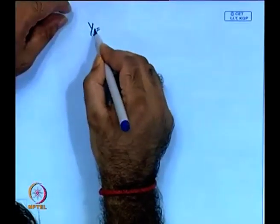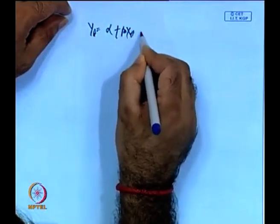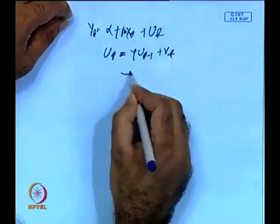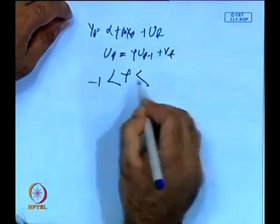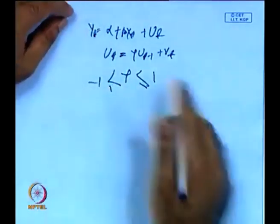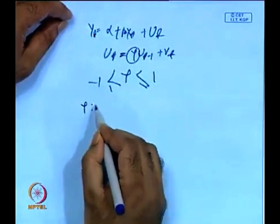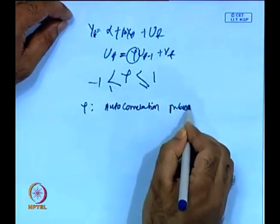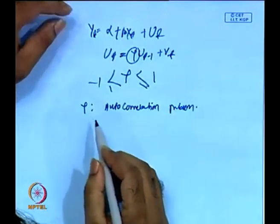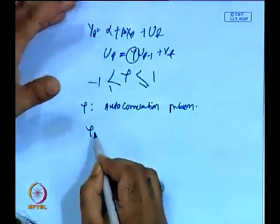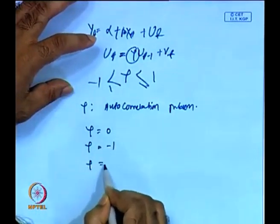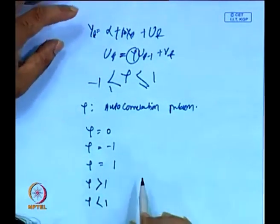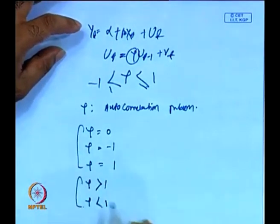Once you have y_t equal to alpha plus beta x_t plus u_t, then u_t equals rho u_{t-1} plus v_t. Rho generally lies between minus 1 and plus 1. Rho is the signal of the autocorrelation problem. There are three extremes: rho equal to 0, rho equal to minus 1, rho equal to 1, and also rho greater than 1 and rho less than 1.